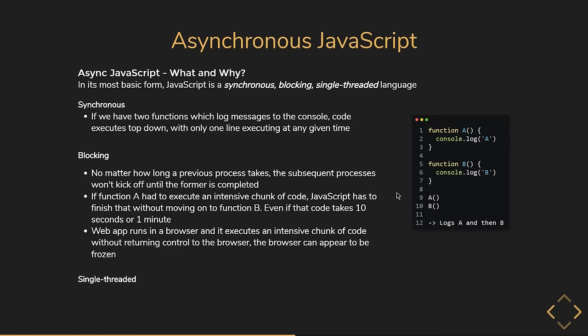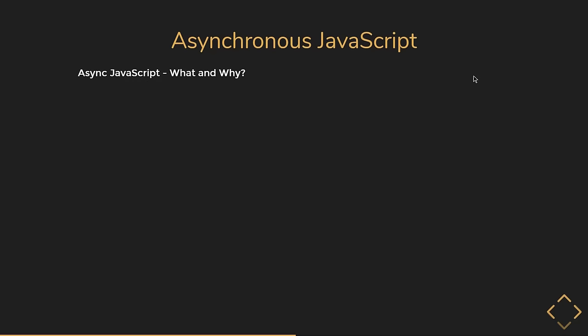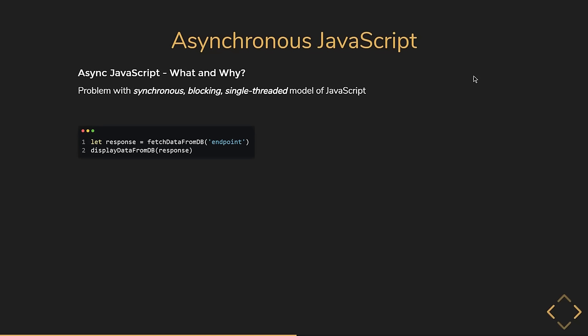JavaScript is single-threaded. A thread is simply a process that your JavaScript program can use to run a task, and each thread can only do one task at a time. Unlike other languages which support multi-threading and can run multiple tasks in parallel, JavaScript has just one thread called the main thread for executing any code. This brings us back to the point that in its most basic form, JavaScript is a synchronous, blocking, single-threaded language — and this model creates a huge problem.